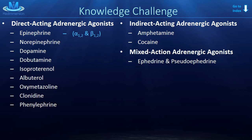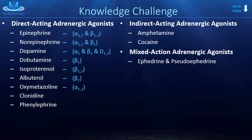Norepinephrine? It's almost the same as epinephrine, except without the beta-2. Dopamine? Alpha-1, beta-1, dopamine-1 and -2. Dobutamine? Just beta-1. Isoproterenol? Beta-1 and beta-2 — it's a non-selective beta. Albuterol? Beta-2. Oxymetazoline? Alpha-1 and alpha-2; however, it favors alpha-1 over alpha-2. Clonidine? Alpha-2. Phenylephrine? Alpha-1.